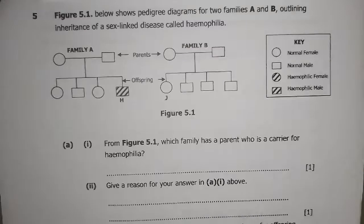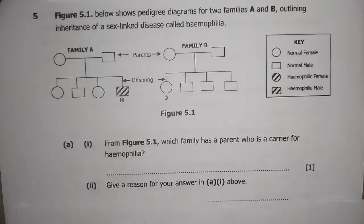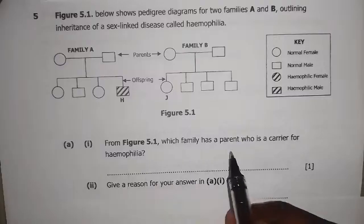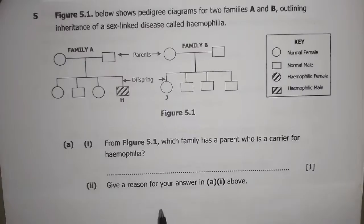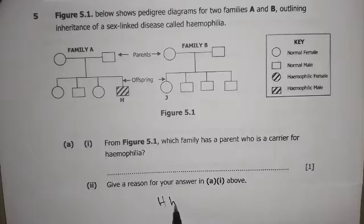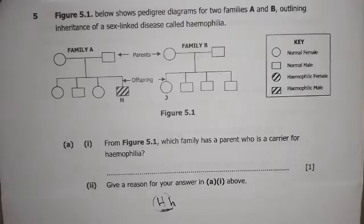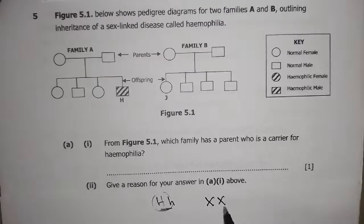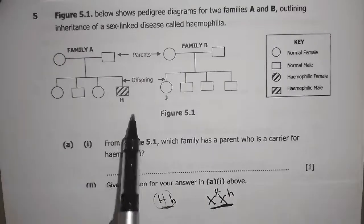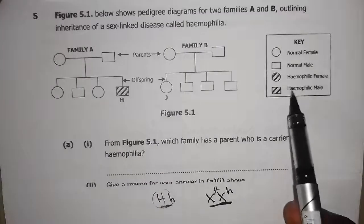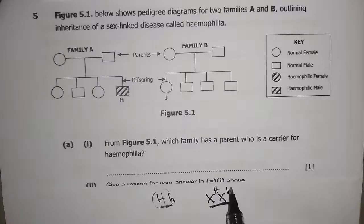The first question asks: from Figure 5.1, which family has a parent who is a carrier for hemophilia? A carrier is someone in the state X capital H X small h. This can only be found in a female because the female has XX chromosomes. Looking at the families, it is family A, because in that family a hemophilic male offspring is produced, indicating the mother must be a carrier.